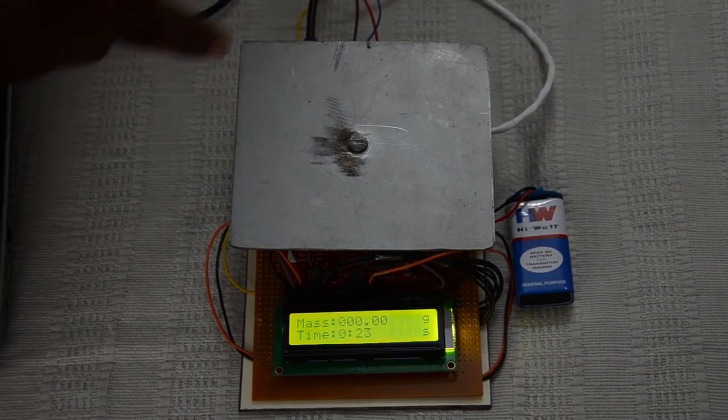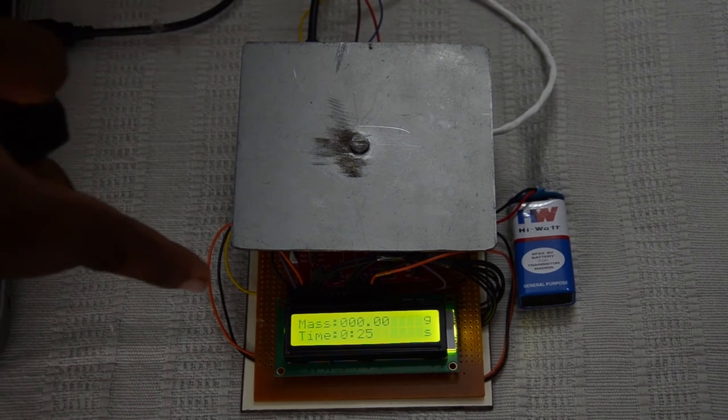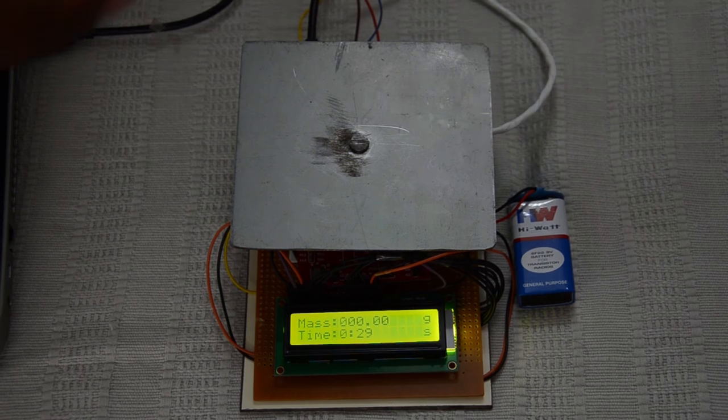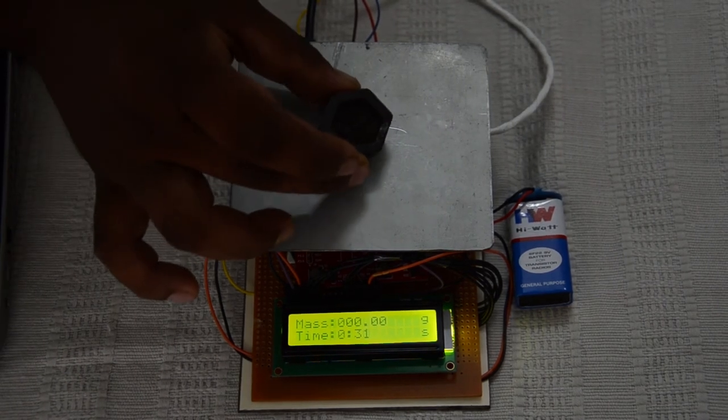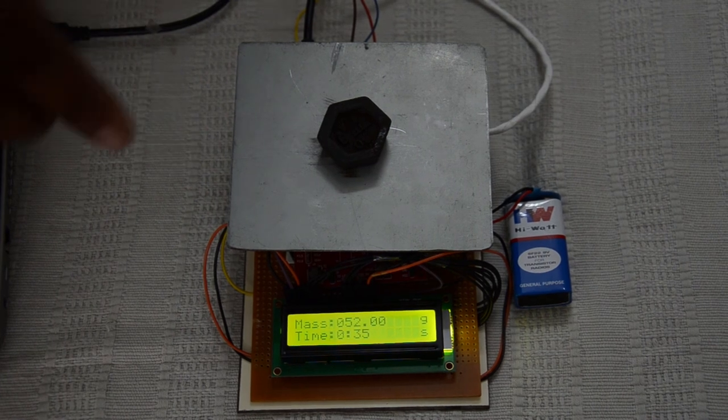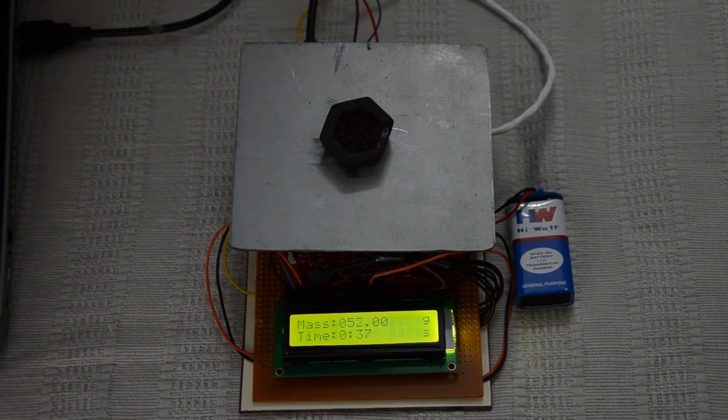This is the full module setup of our digital weighing machine. Initially, the LCD display is set to 0. A 50 gram standard weight is placed on the weighing machine. Now, the display shows 52 grams. This extra 2 grams is because of external disturbances.